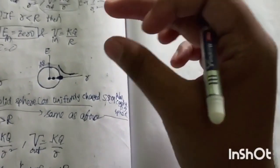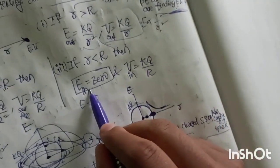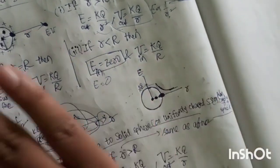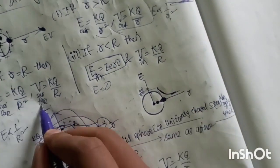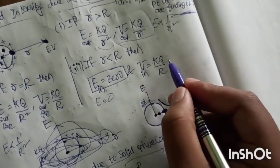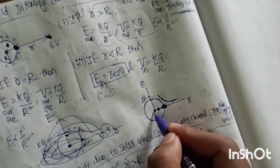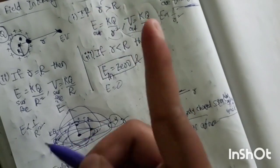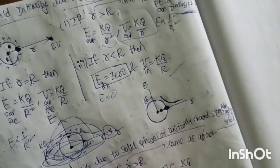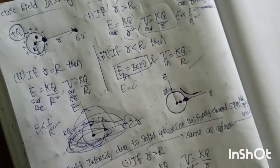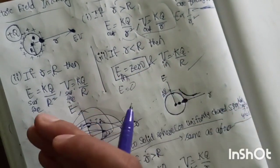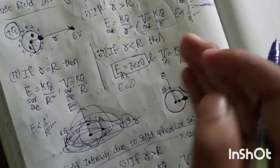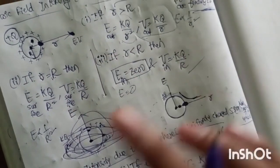This is different for conducting versus non-conducting. In a conducting sphere, E inside equals zero and V inside is constant and equal to kq by R — the surface potential. For the solid non-conducting sphere, E inside is not zero; it varies with r.